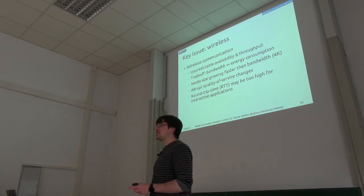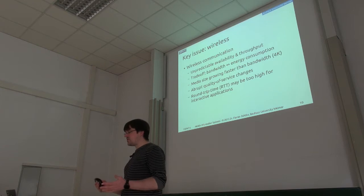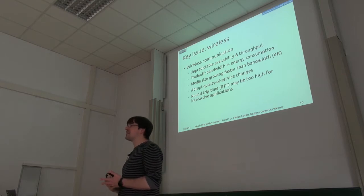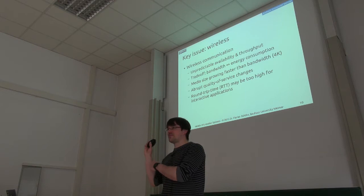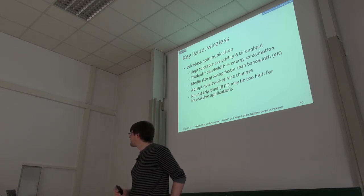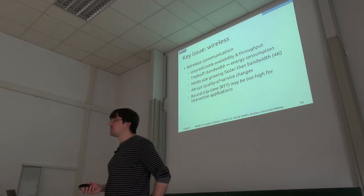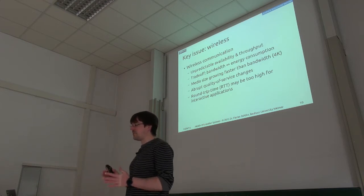The next big topic is wireless communication. The big issue here is that it's unpredictable — the throughput might go down, and the availability might be spotty. We have that trade-off again with energy consumption. Usually the size of the media we actually want to consume is growing much faster than the bandwidth available.